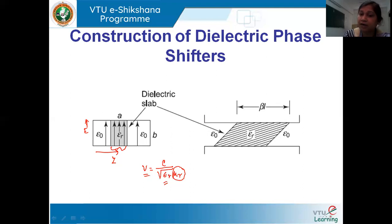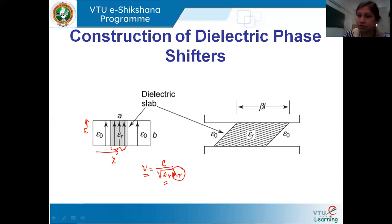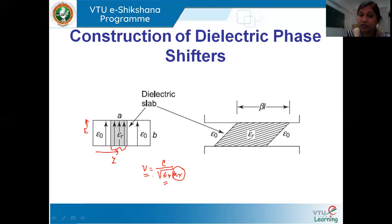When the velocity of propagation changes, the wavelength of the wave also changes. When the wavelength changes, the phase constant associated with the wave also changes. When the total phase constant associated with the wave changes, the total phase covered by the wave changes — there is a phase shift occurring in the wave propagation. So that is the main working principle.